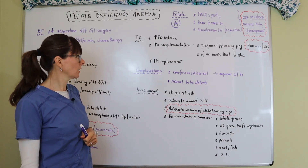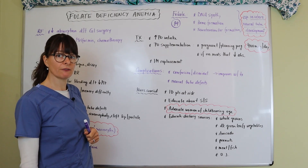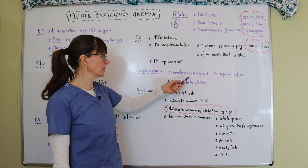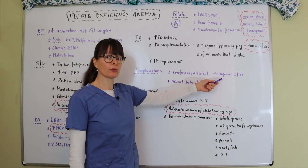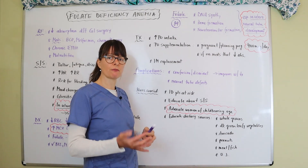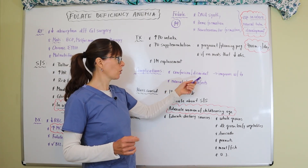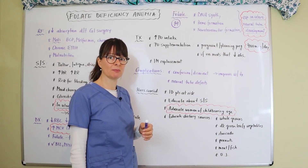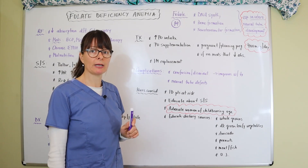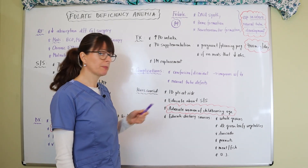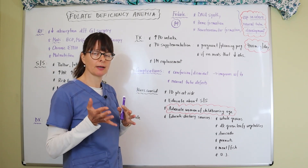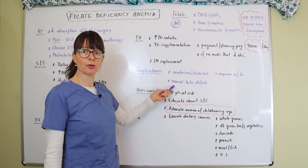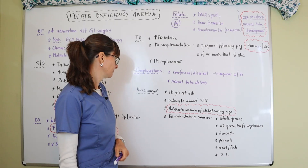When folate deficiency becomes severe, complications include confusion and disorientation, but these actually improve with treatment — if we supply the patient enough folate, these symptoms will go away. This is unlike B12 deficiency anemia, where neurologic symptoms can be permanent and irreversible. Keep that distinction in mind. Another complication is neural tube defects in utero, which we already discussed.